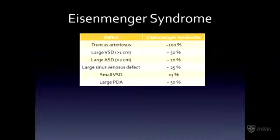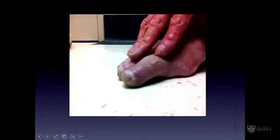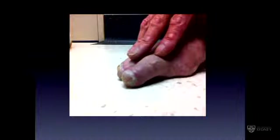The timing of surgery to prevent Eisenmenger syndrome also varies from patient to patient. In truncus arteriosus, you really need to repair very early in life; a large ventricular septal defect may allow you to wait until around age two. However, a patient with a VSD and Down syndrome really needs to be operated on within their first year of life. This patient has clubbed cyanotic toes and pink non-clubbed fingers — indicating a defect with right-to-left shunting below the arms — specifically a hypertensive patent ductus arteriosus with Eisenmenger syndrome.